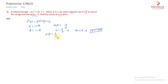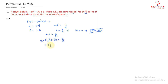Now α·β = c/a. So (1 + √3)(1 − √3) = c/a. Using the identity (a + b)(a − b) = a² − b², this equals 1 − 3 = −2. Therefore c/a = −2, which gives c = −2a.